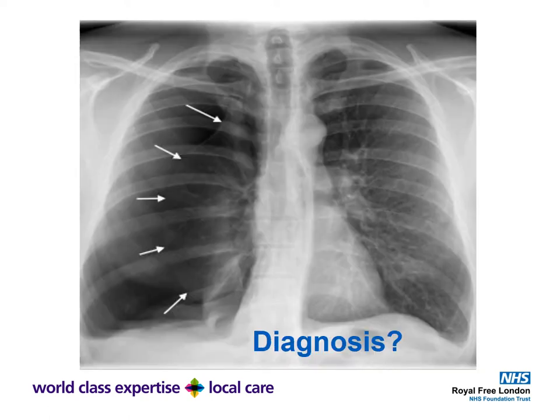What's the diagnosis here? There is a large right-sided pneumothorax, as evidenced by the arrows. Looking at the highlighted area, there is probably a difference of about four centimeters between the rib cage and where the lung tissue has collapsed to. This is the type of patient where, rather than a simple aspiration, we would go ahead and insert a chest drain.